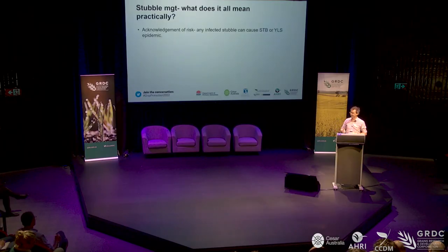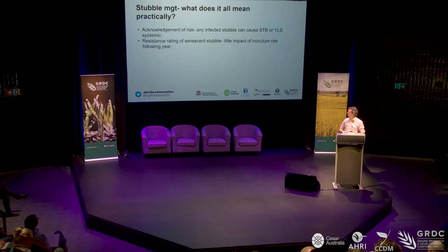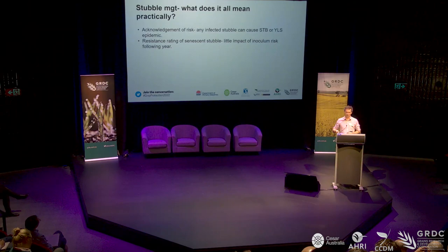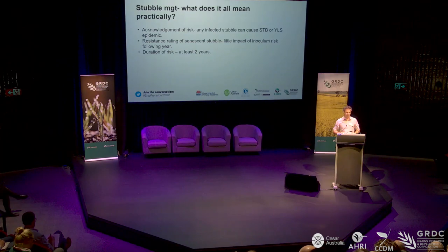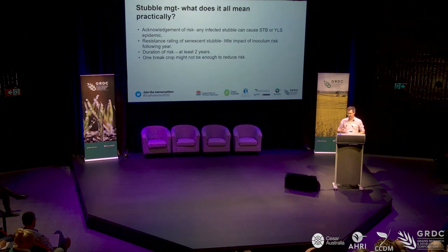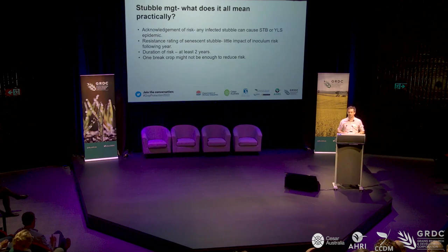The acknowledgement that any infected stubble can cause an epidemic, and as discussed, the resistance rating of the senescent stubble does not decrease or increase the risk of inoculum coming off that stubble for the proceeding crop — but the distinction must be made that in-crop it does make a difference. It's also about duration of risk: for at least two years minimum, that stubble can release spores to initiate an epidemic. Coming back to our tight rotations — one break crop is probably not enough to reduce your risk of yellow leaf spot or septoria infection.